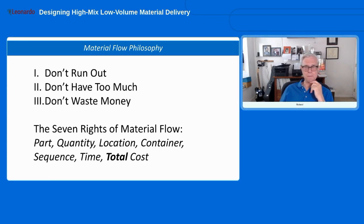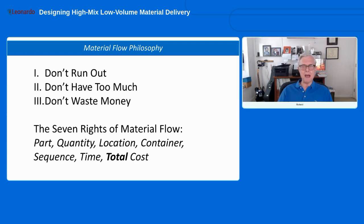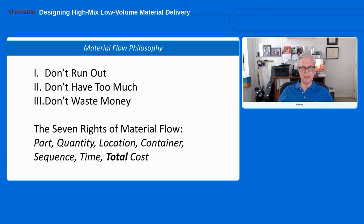We don't use the term 'minimize inventory' because absolute minimization may not be flexible or responsive enough if something changes. Overall with our material delivery system, we don't want to waste money — we don't want a lot of non-value-added activity. That means avoiding overstaffing or investing in expensive equipment we don't really need. The Toyota Production System's seven wastes can be applied here pretty well.